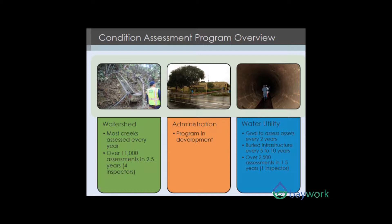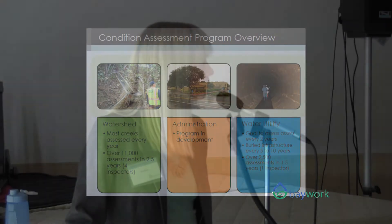In the water utility, our goal is to assess our assets every two years. We don't always meet that goal. We've done about 2,500 assessments in the last year and a half.